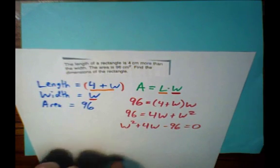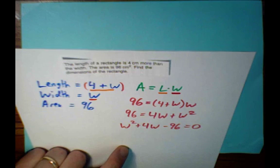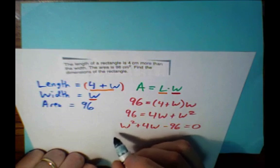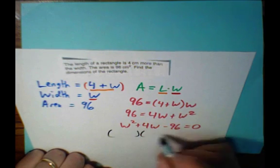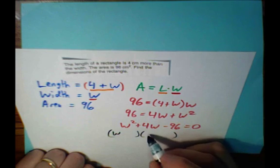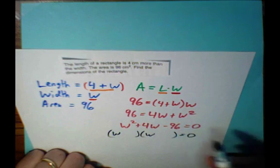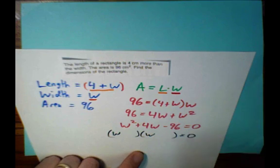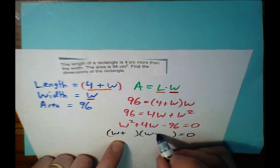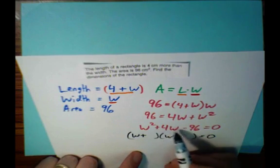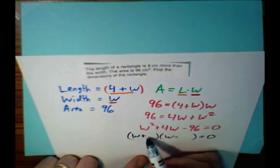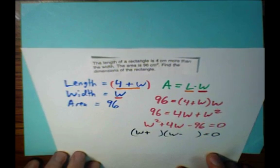Now we're going to solve this quadratic. This is a simple trinomial. We're going to have W, W. The product is negative 96, so we're going to have a positive value and a negative value. And the sum is a positive 4, so the positive value is going to be slightly bigger.